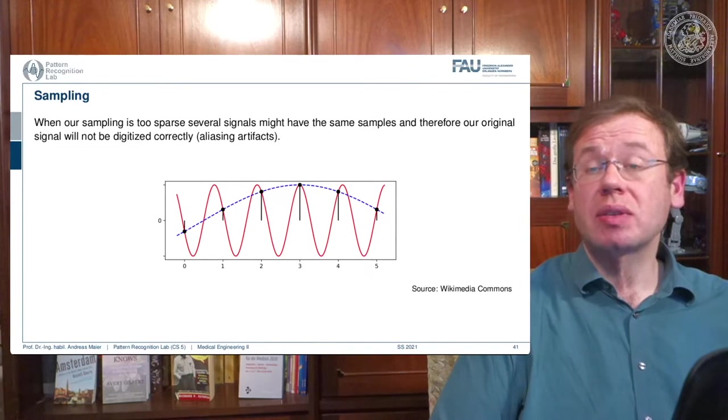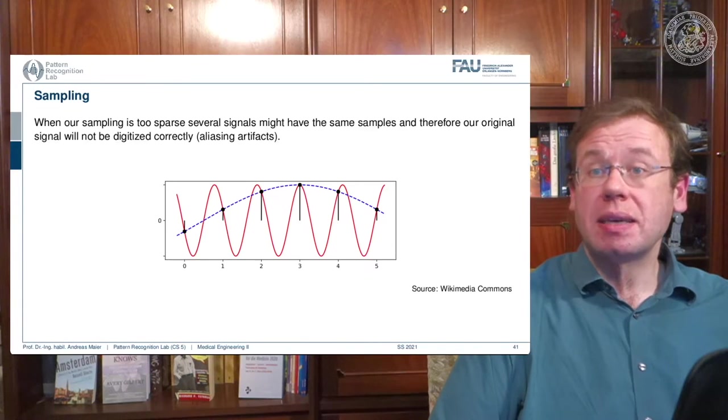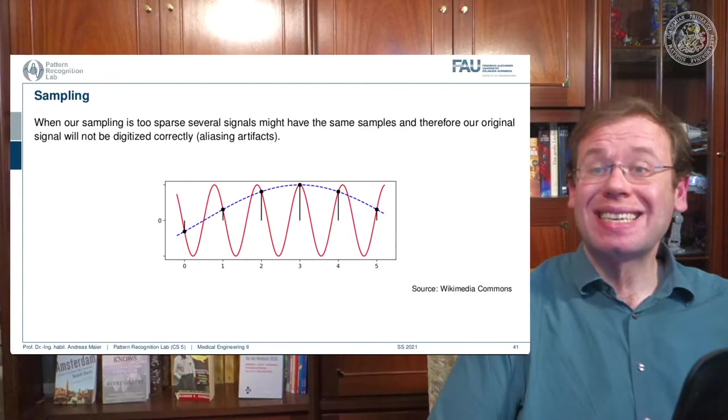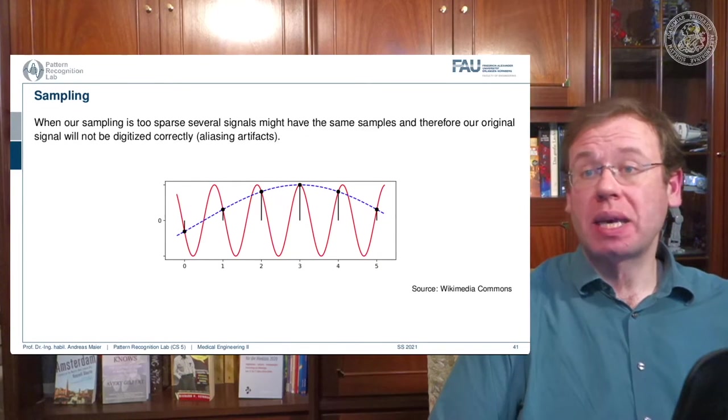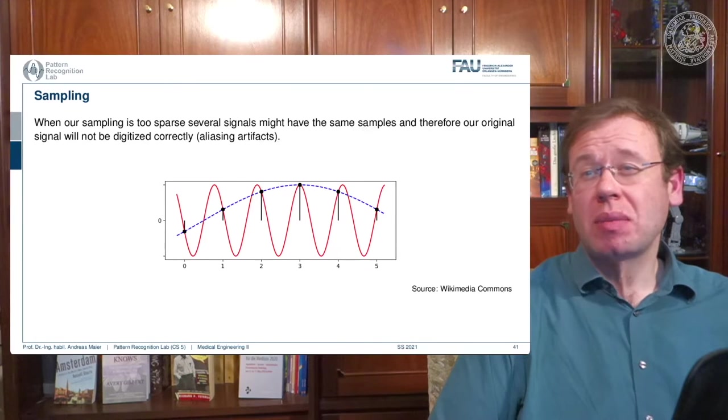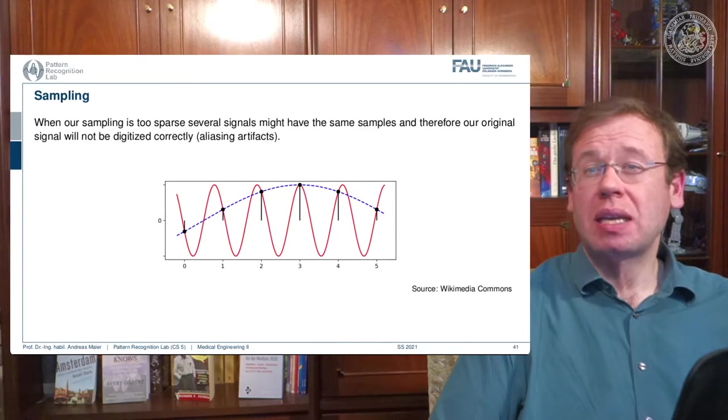So I get some values and the values are created exactly where the sampling frequency then hits again, our red curve. So I produce those black dots. And now I have the black dots. And I want to restore the original signal.